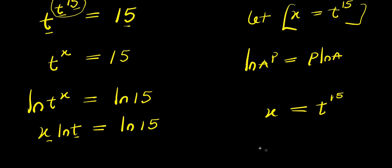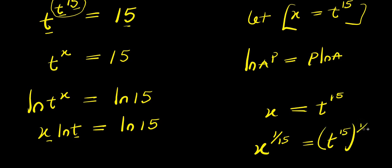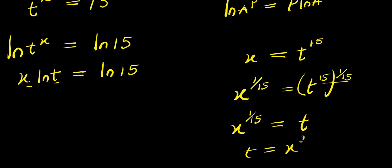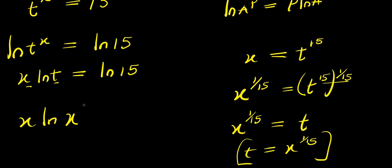So I come over to this particular equation which is x equals t^15. From here I can isolate t. I can have x^(1/15) equals t^15 raised to the power of 1/15. If I multiply this exponent I'll have x^(1/15) equals t^(15 times 1/15), and 15 divided by 15 is 1, so t equals x^(1/15).